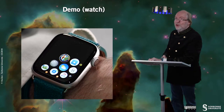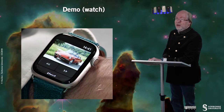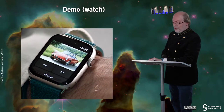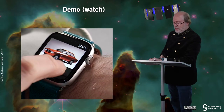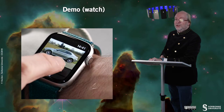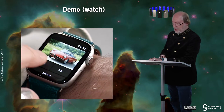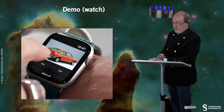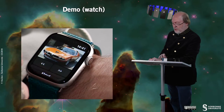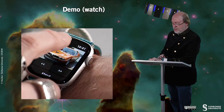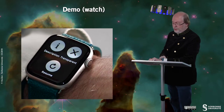Let's now have a look at the application on the Apple Watch. You see that it displays a car, and if I tap on the next button I display another car — it's a circular display. Let's have a look at this one. I press and activate the menu.